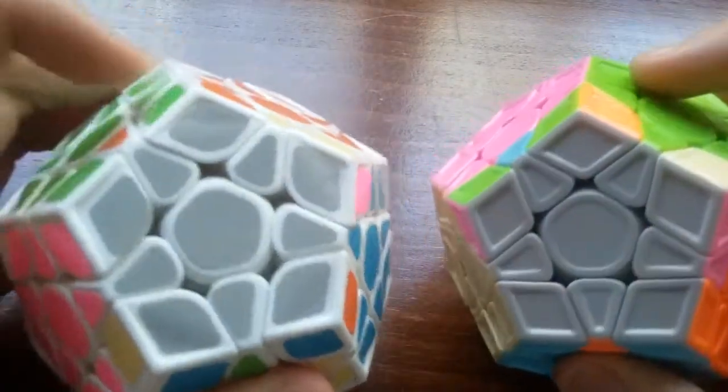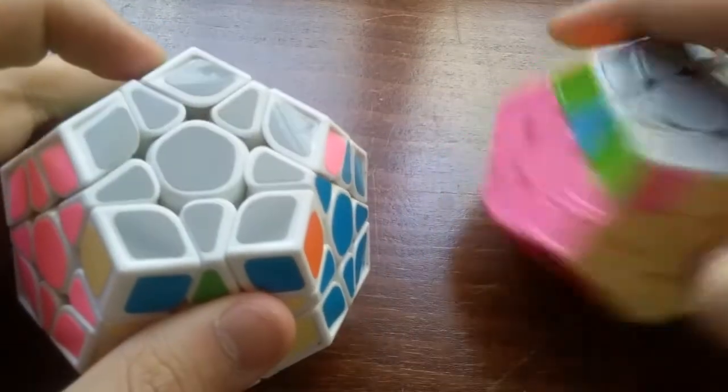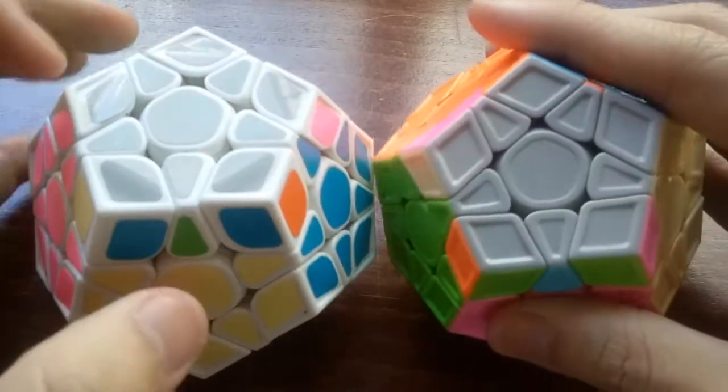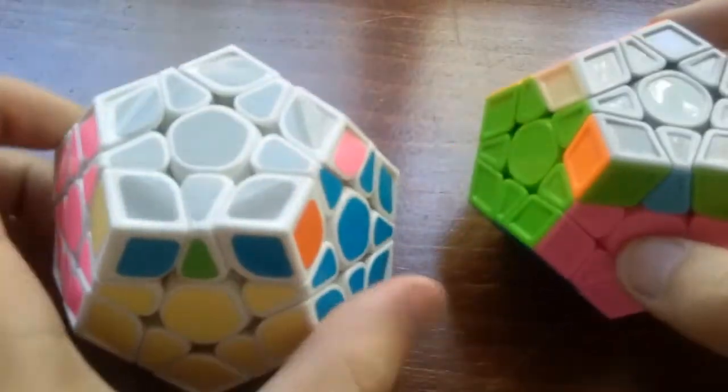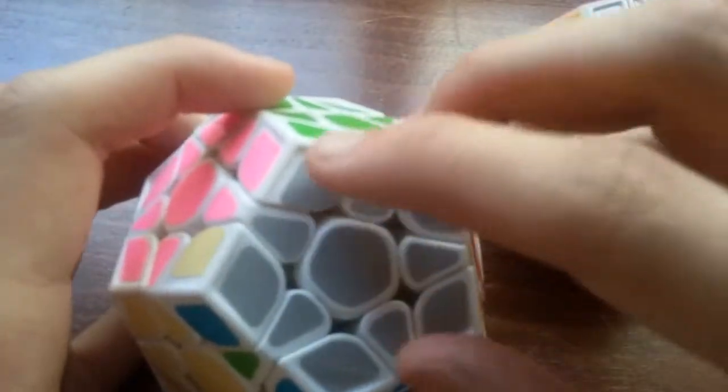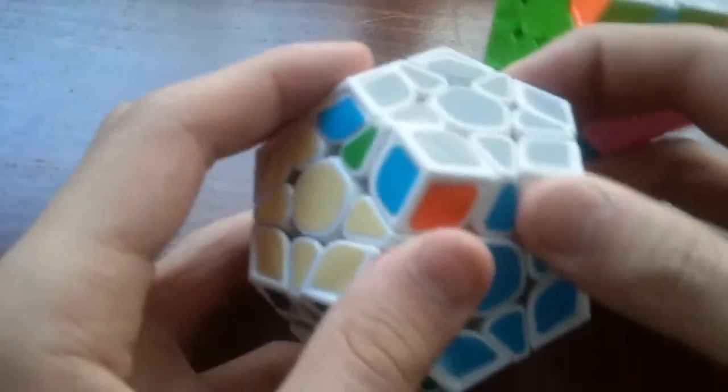And you tell the difference between these two cases the same way. Here, if you hold the solved edges here and here, you have headlights here on the left, and then here you have headlights here on the right. So for the case with headlights on the left, you would do this algorithm.